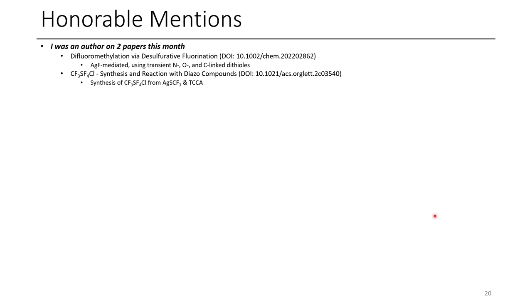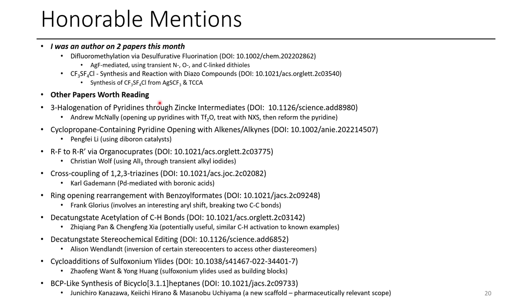For this month's honorable mentions, I'll mention that I was an author on two papers published in the past month — one in Chemistry European Journal and one in Org. Lett. — and I'll include links in the description. Other honorable mentions include the halogenation of pyridines in the 3-position, where they unzip the pyridines, functionalize, and reclose using triflic anhydride. There's also an interesting functionalization of cyclopropane-containing pyridines, the conversion of aliphatic fluorides to iodides and cross-coupling using cuprates, and cross-coupling of 5-bromo-1,2,3-triazine.